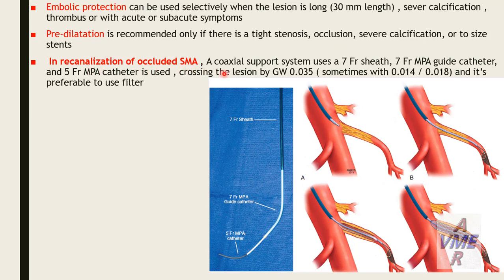For recanalization of an occluded superior mesenteric artery, a coaxial support system using a 7-French sheath, 7-French multipurpose catheter, and 5-French multipurpose catheter is used. Lesion crossing is performed using a 0.035, 0.018, or 0.014 guidewire. A filter is preferred during recanalization. Long-segment separation with a guiding multipurpose catheter provides pushability and support. Stent deployment uses a balloon-mounted bare-metal or covered stent, size 6 or 7 mm in the SMA, encroaching 1–2 mm into the aorta.